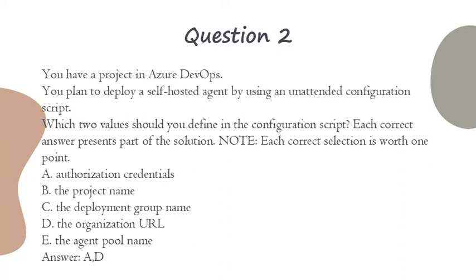Note: Each correct selection is worth one point. A. Authorization credentials. B. The project name. C. The deployment group name. D. The organization URL. E. The agent pool name.